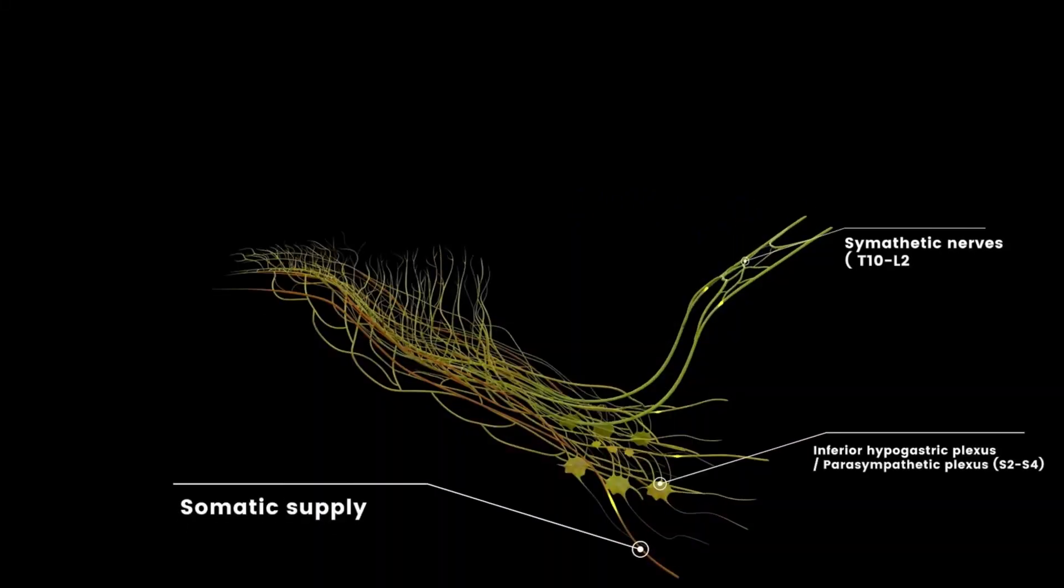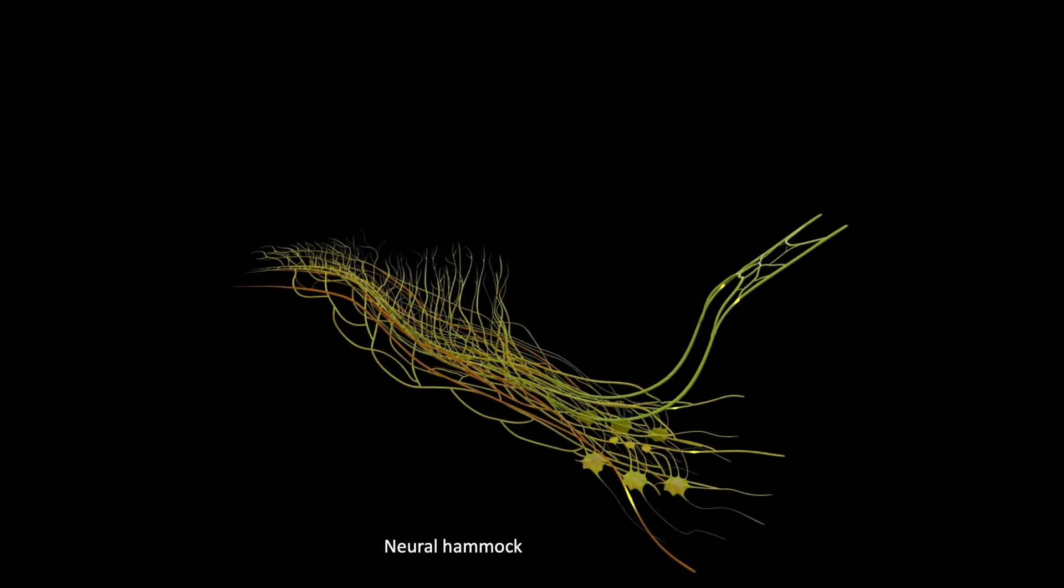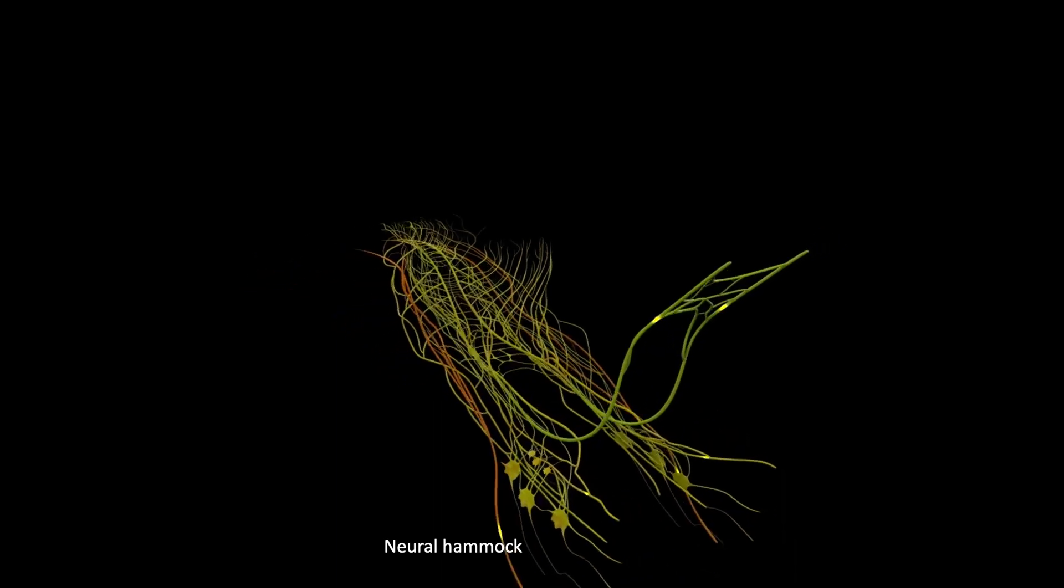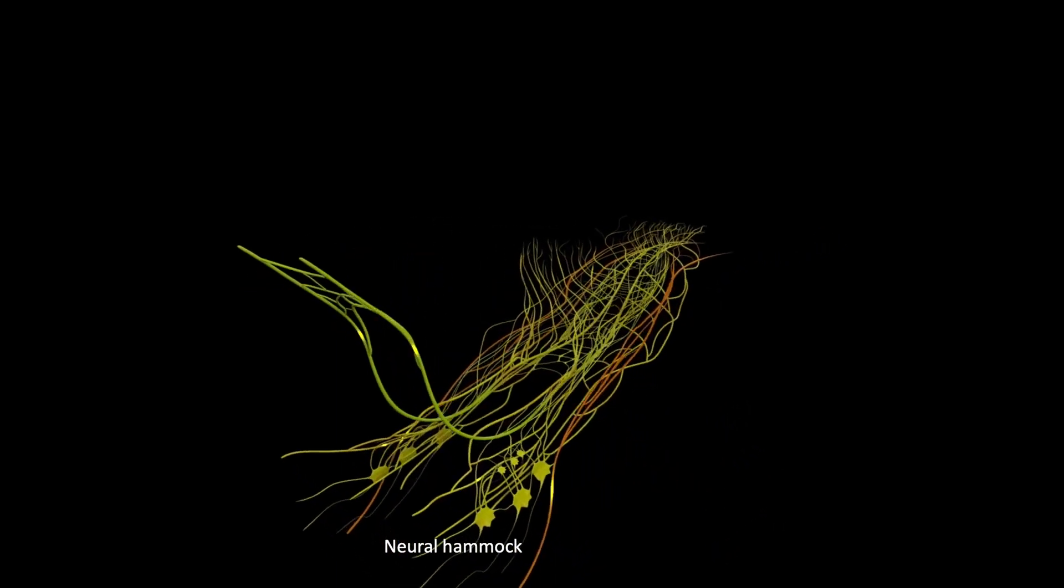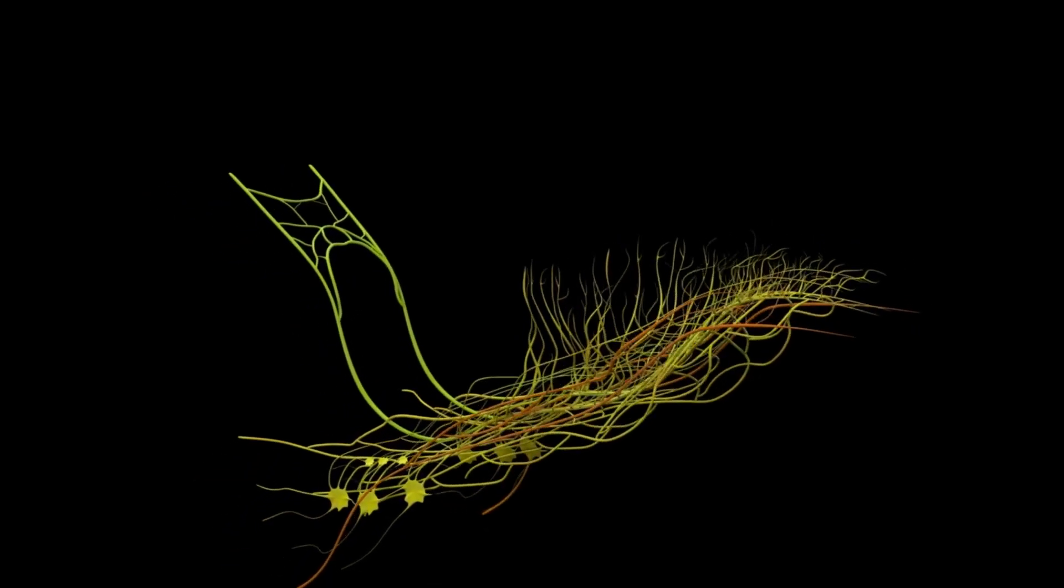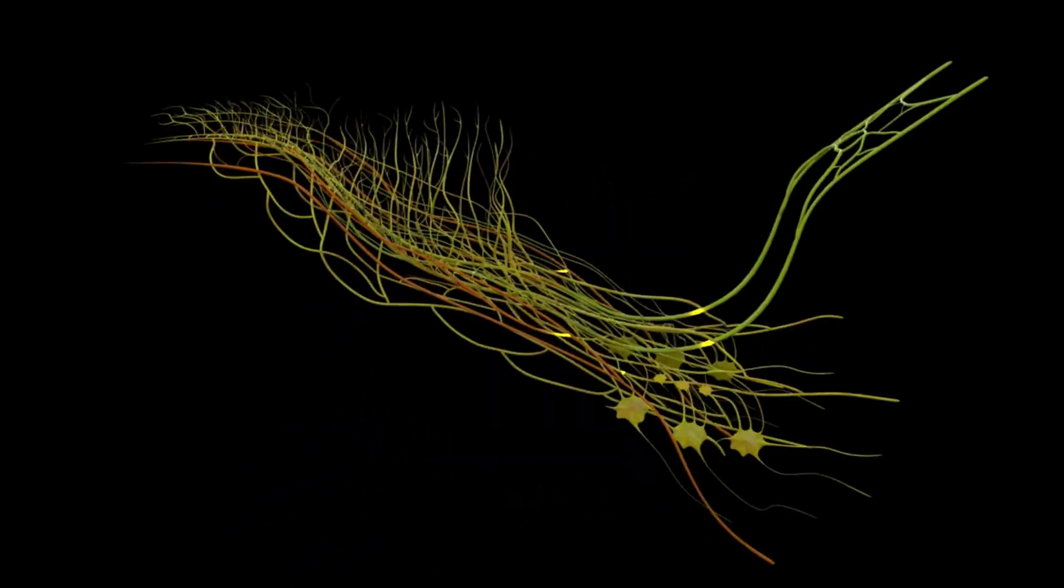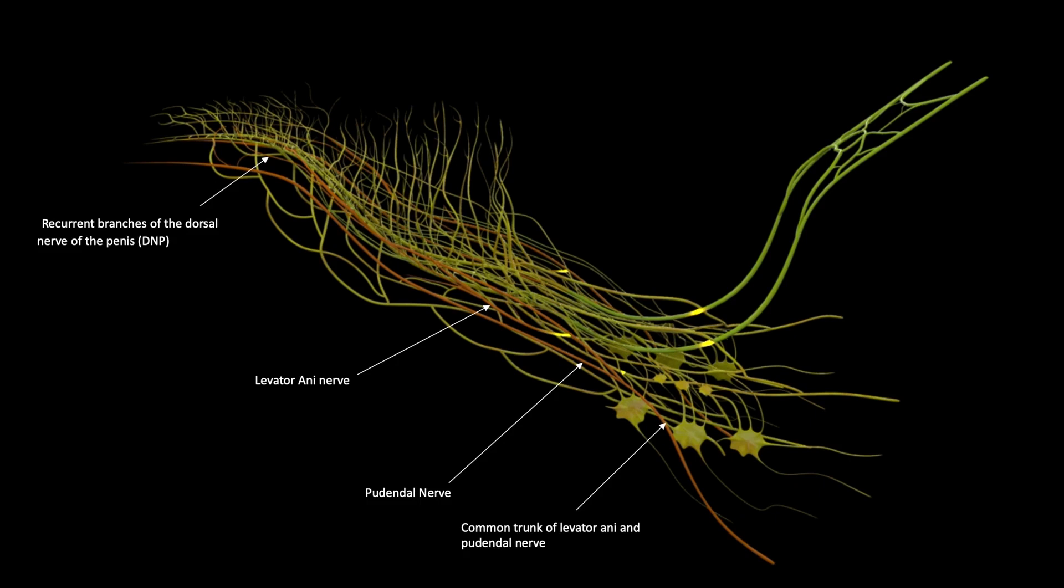The pelvic plexus, also known as the inferior hypogastric plexus, is denoted as the proximal neurovascular plate. The autonomic fibers from this neurovascular plate are distributed into the neurovascular bundle and accessory neural pathway in a spray-like pattern, with 60% of these fibers extending on the posterolateral side of the prostate and 40% on the anterolateral prostate.